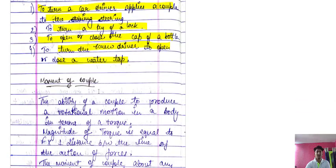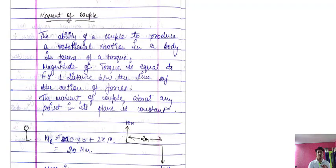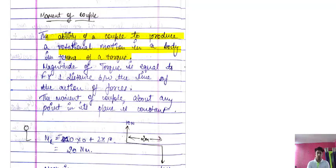What is the moment of a couple? The moment is the ability of a couple to produce rotational motion in a body in terms of a torque. The magnitude of the torque is equal to the force multiplied by the perpendicular distance between the line of action of the forces.